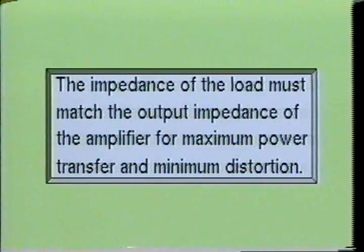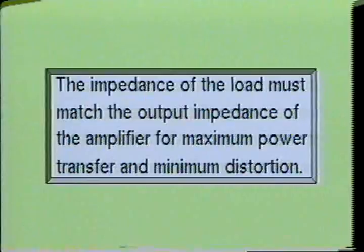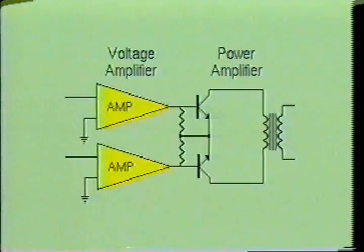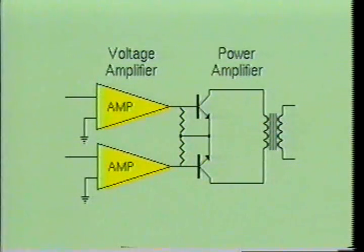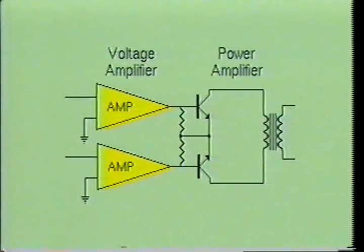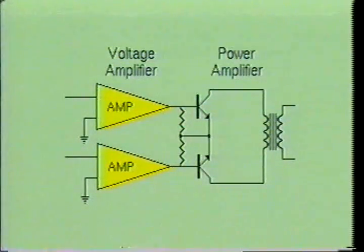The ability of an amplifier to deliver a signal must be matched to the requirements of the load being supplied. The circuit used to couple the power to the load will generally be a power amplifier, which is usually fed by voltage amplifier stages. The voltage amplifier is used to boost the incoming signal to a level sufficient to drive the power output stage. Voltage and power amplifiers have significant differences from one another; therefore, we will examine them separately.